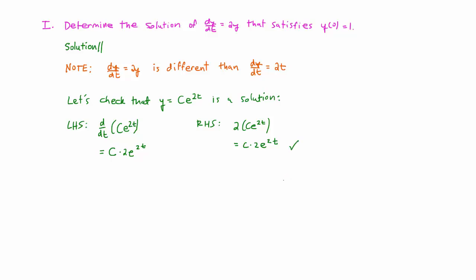All that's left is to determine the value of c so that y of 0 is equal to 1. To do that, we can just plug in 1 for y and 0 for t into our function, and this implies that 1 equals c times e to the 0, which is just 1, and therefore that c is equal to 1.